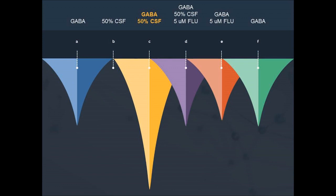When GABA is applied to cells experimentally, we can record the resulting inhibition shown as a downward dip in this figure. If the cerebrospinal fluid from a patient with GABA-related hypersomnia is applied to the same cells by itself, there is no response. However, if the substance is applied simultaneously with GABA, this combination potentiates the resulting inhibition — in fact, the inhibition is twice as strong. That's the difference between someone saying stop and someone yelling stop. It turns up the volume on the inhibition and hence the overpowering sleep drive.